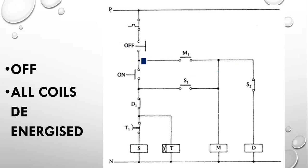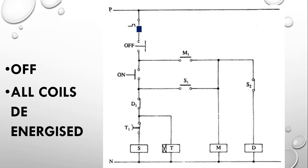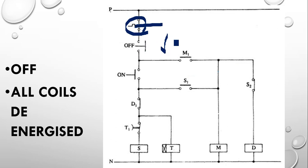To stop the motor, press the off button — this opens the NC contact, cutting supply to all control coils, and the motor stops. Similarly, if an overload occurs, the thermal overload trip contact opens, switching the motor off automatically.